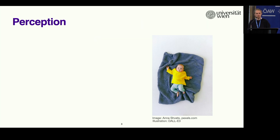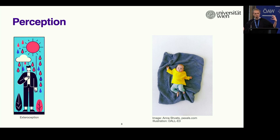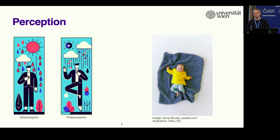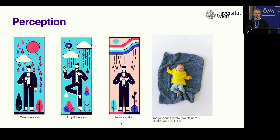When we talk about infants' perception of the world, there are basically three ways in which we can perceive the world. The first one being exteroception — the perception of the world around us through hearing or vision. The second being proprioception, which is the perception of our body parts in our environment. And the third one being interoception, which is the perception of our own bodily signals. What is quite interesting is that we know a lot about exteroception and proprioception, but we have quite limited knowledge about interoception in infants — how it develops and what it is related to.